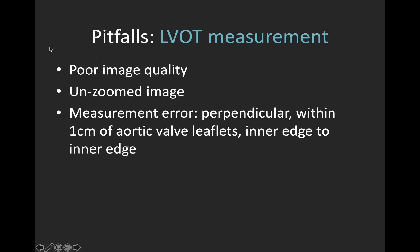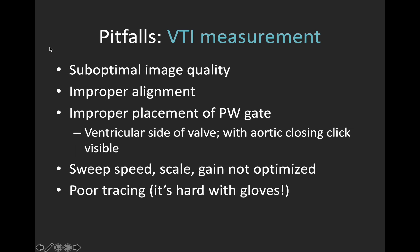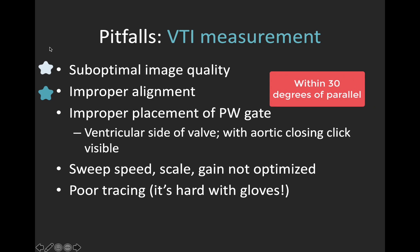Now let's talk about pitfalls. There are definitely pitfalls and sources of error, especially with the LVOT diameter measurement. You need a good quality image — zoomed — and you want to make sure you're measuring properly: perpendicularly at the insertion point of the valve leaflets, in systole, inner edge to inner edge. Measuring the VTI is actually a little more forgiving of suboptimal 2D images as you can still get a reasonable Doppler trace. More important here is alignment — blood flow must be parallel to the Doppler line of interrogation, and you generally have about 30 degrees of flexibility before introducing too much error. You also want to make sure your PW gate is properly placed within the LVOT on the ventricular side, close enough to the aortic valve that you see an aortic closing click in your Doppler waveform. Optimizing sweep speed, scale, and gain can help with accurate tracing, especially with gloves on.